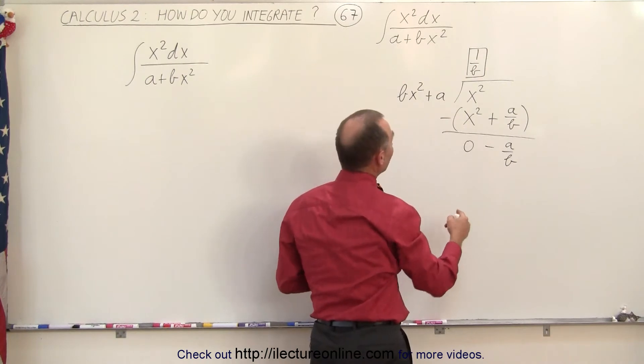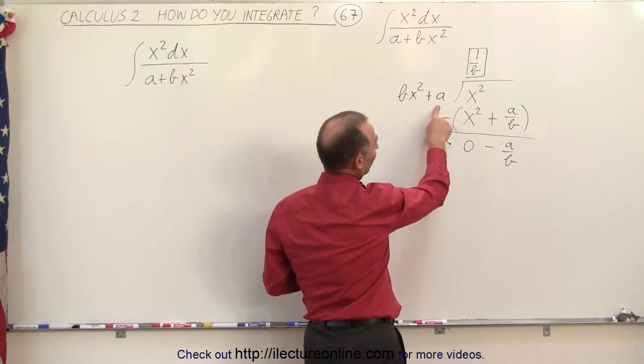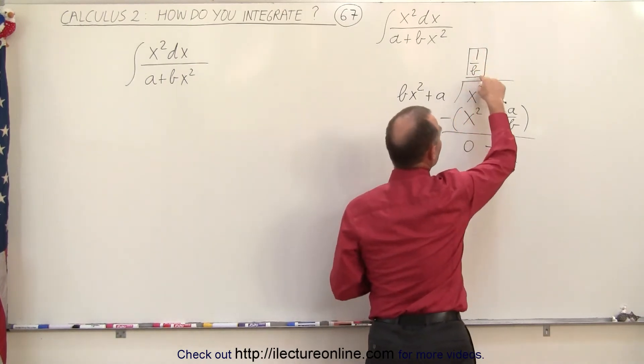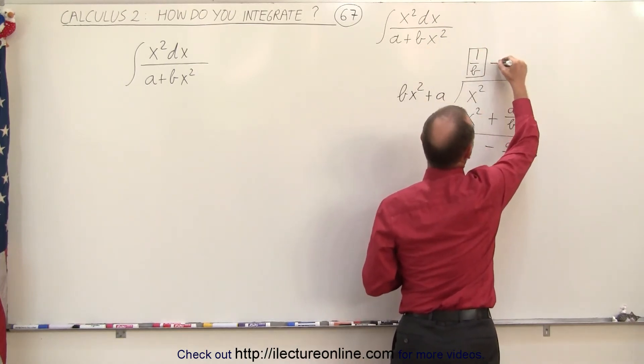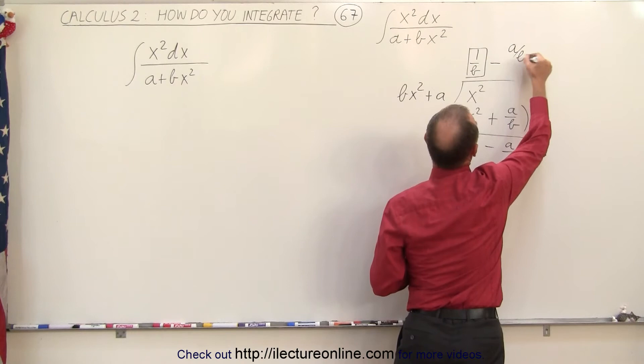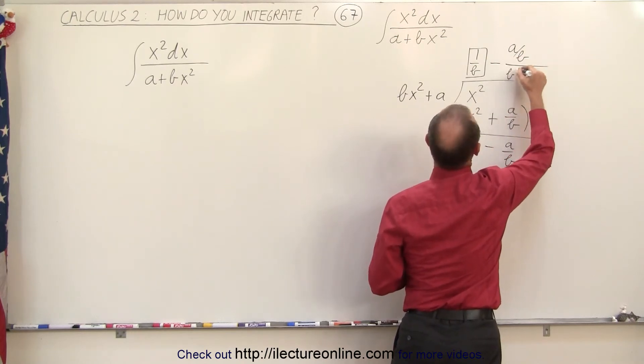So the result is that if I divide bx squared plus a into x squared, I get 1 over b minus a over b divided by the divisor. That would be minus a over b divided by bx squared.